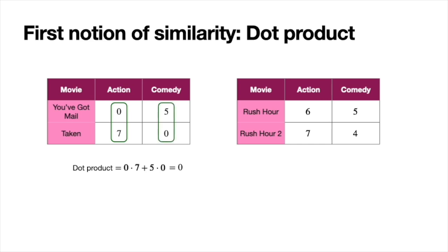However, for the similar pair on the right, we get a large number: 62. The reason is that the high scores for action match and the high scores for comedy match. Therefore, we get a high dot product — a high similarity — for the pair on the right, and a low one for the pair on the left.